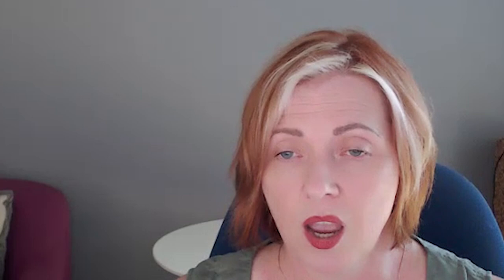Employees, in effect, owned the organisation and used resources for their own gain rather than to serve customers. Weber envisioned organisations that would be managed on an impersonal or rational basis — this form of organisation was called a bureaucracy. Weber believed that an organisation based on rational authority would be more efficient and adaptable to change, because continuity is related to formal structures and positions rather than to a particular person who may leave or die. To Weber, rationality in organisations meant employee selection and advancement based on competence rather than on who you know.